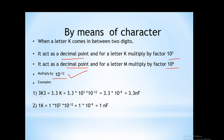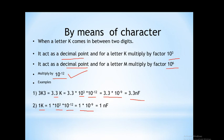For example, if 3K3 is on the surface, replace K with a decimal point to get 3.3, multiply by 10 to the power 3 for kilo, and then by 10 to the power minus 12, giving 3.3 into 10 to the power minus 9, which is 3.3 nanofarad. Similarly, 1K: replace K with a decimal point to get 1.0, multiply by 10 to the power 3 and then by 10 to the power minus 12, giving 1.0 into 10 to the power minus 9, which is 1 nanofarad.